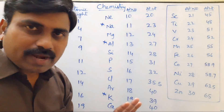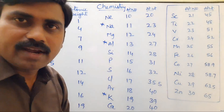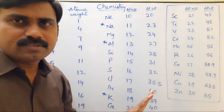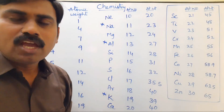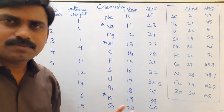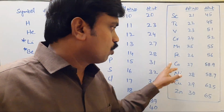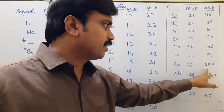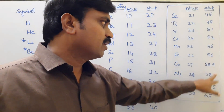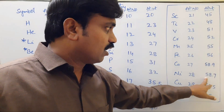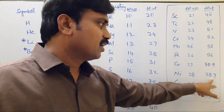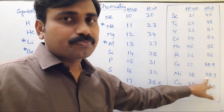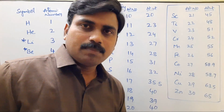You should practice all these atomic numbers and atomic weights. If you practice all of these, you will definitely be able to get the molecular mass of any chemical substance. Note that Cobalt and Nickel are anomalous pairs — Cobalt's atomic weight is 58.9 and Nickel's is 58.7, which is slightly less. This is one reason why Mendeleev's theory failed.